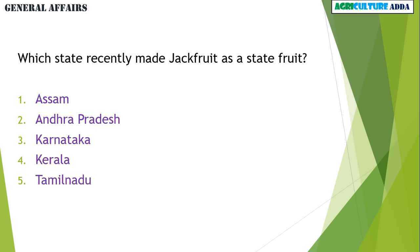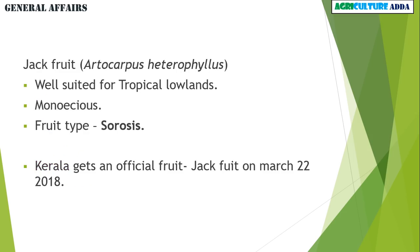In the general affairs section: Which state recently made jackfruit its state fruit? Assam, Andhra Pradesh, Karnataka, Kerala, or Tamil Nadu? The answer is Kerala. Jackfruit is available in tropical lowlands, it is monoecious, and its fruit type is sorosis. Kerala officially declared jackfruit as its state fruit on March 22, 2018.